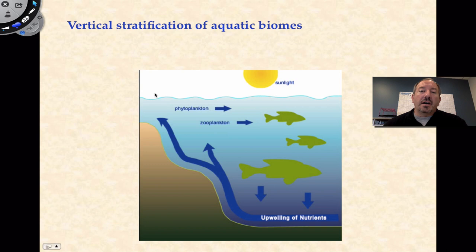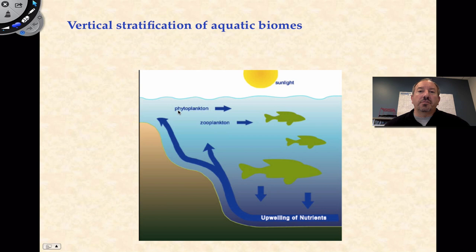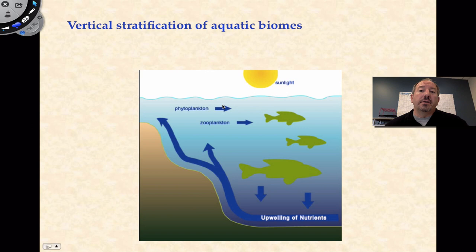When considering water biomes, a lot of the conversation comes from looking at a profile — a side view of a water environment — and we create layers or strata. We name these different regions for clarity of conversation; if you're specializing as a marine biologist, these terms are extremely useful. A lot of the phytoplankton, as one might imagine, is sitting up toward the top of the water because it's dependent on the sun for photosynthesis.